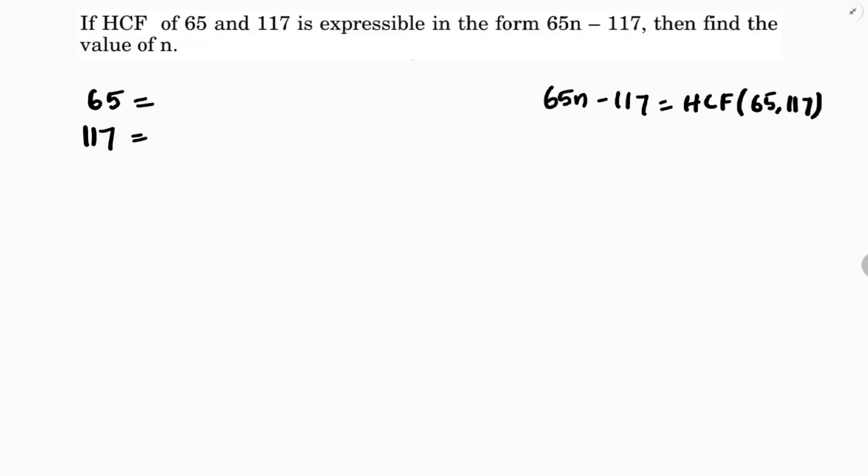65 if we do prime factors, 5 times 1, 5 times 13. So 5 and 13. And 117 if we do prime factors, 3 times 3,